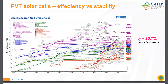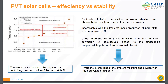Let's start with this famous NREL efficiency chart, which gives the evolution of the power conversion efficiency for different photovoltaic technologies. Interestingly, we can see that for perovskite solar cell technology, the power conversion efficiency has reached more than 25% in only a few years, which means that this is a very interesting photovoltaic technology.